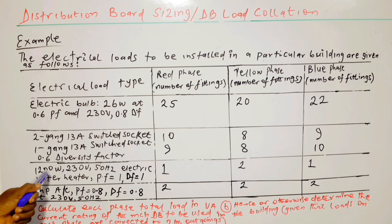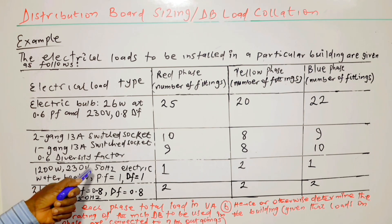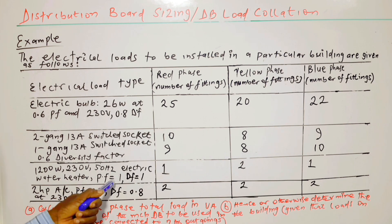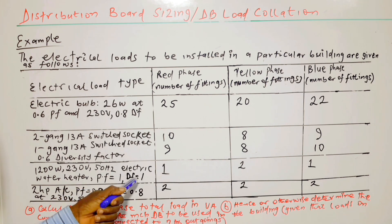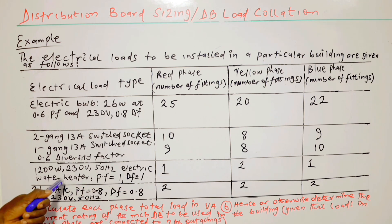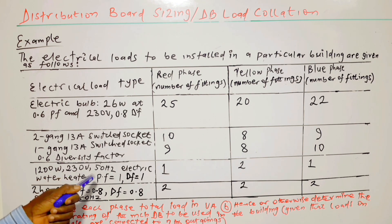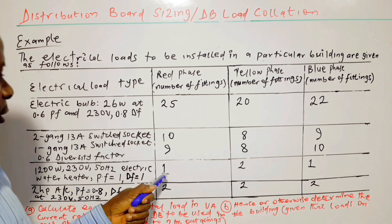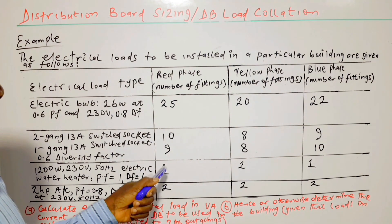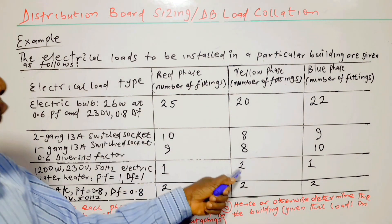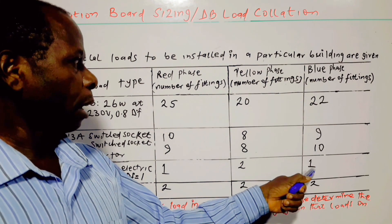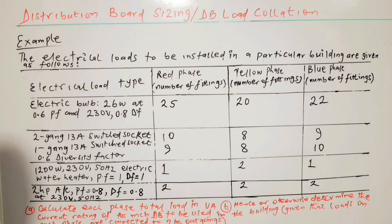1,200 watts, 230 volts, 50 hertz electric water heater. Power factor is equal to 0.8, diversity factor is equal to 1. It's a heating load — that's why the power factor is 1. Any heating load has a unity power factor. So we have 1 water heater on red phase, 2 on yellow phase, and 1 on blue phase.